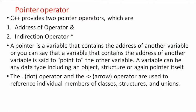C++ provides two pointer operators: the address operator, which is the ampersand symbol, and the indirection operator, which is the star symbol. A pointer is a variable that contains the address of another variable. The dot operator and arrow operator are used to reference individual members of classes, structures, and unions.